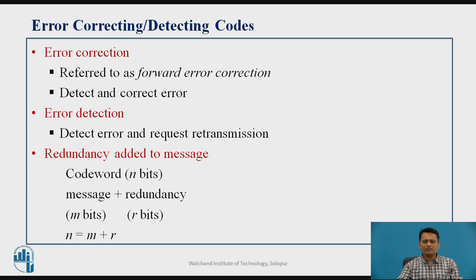Either you can go for error correction techniques, also called forward error correction or forward error control. You transmit the data, and if an error is detected, you try to correct the error at the receiver side itself. This technique is called error correction — where you detect the error as well as correct the error.